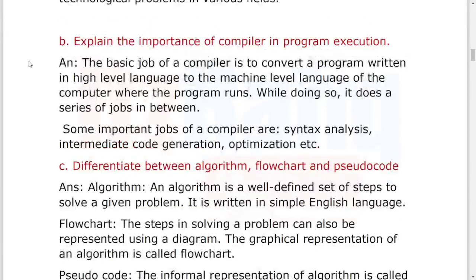Number C: Differentiate between algorithm, flowchart, and pseudocode. Algorithm means it's well-defined steps written in English. Flowchart is a graphical representation, and pseudocode is the informal representation of any algorithm. You can write this answer this way.